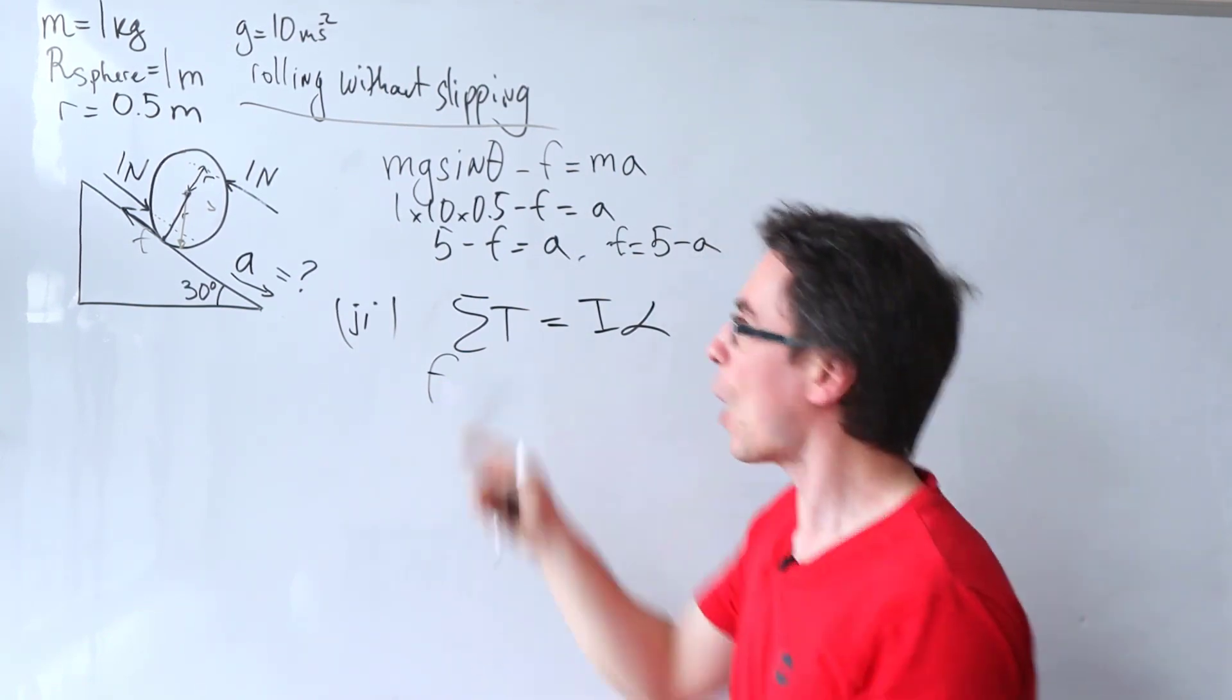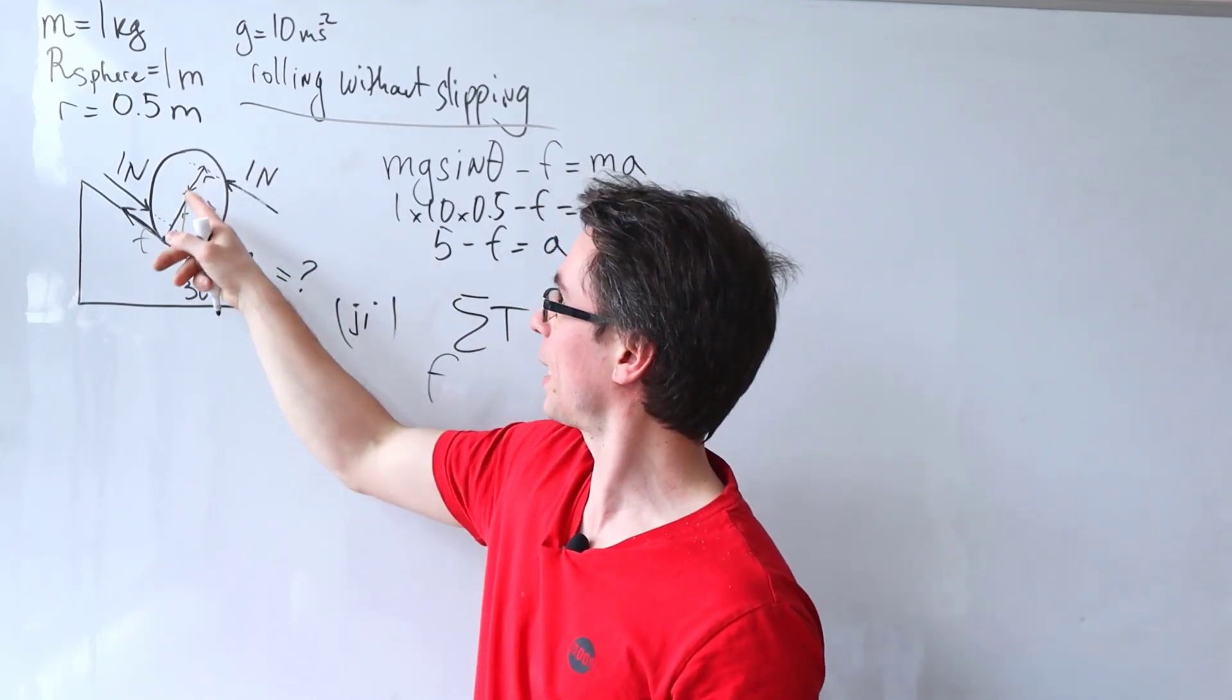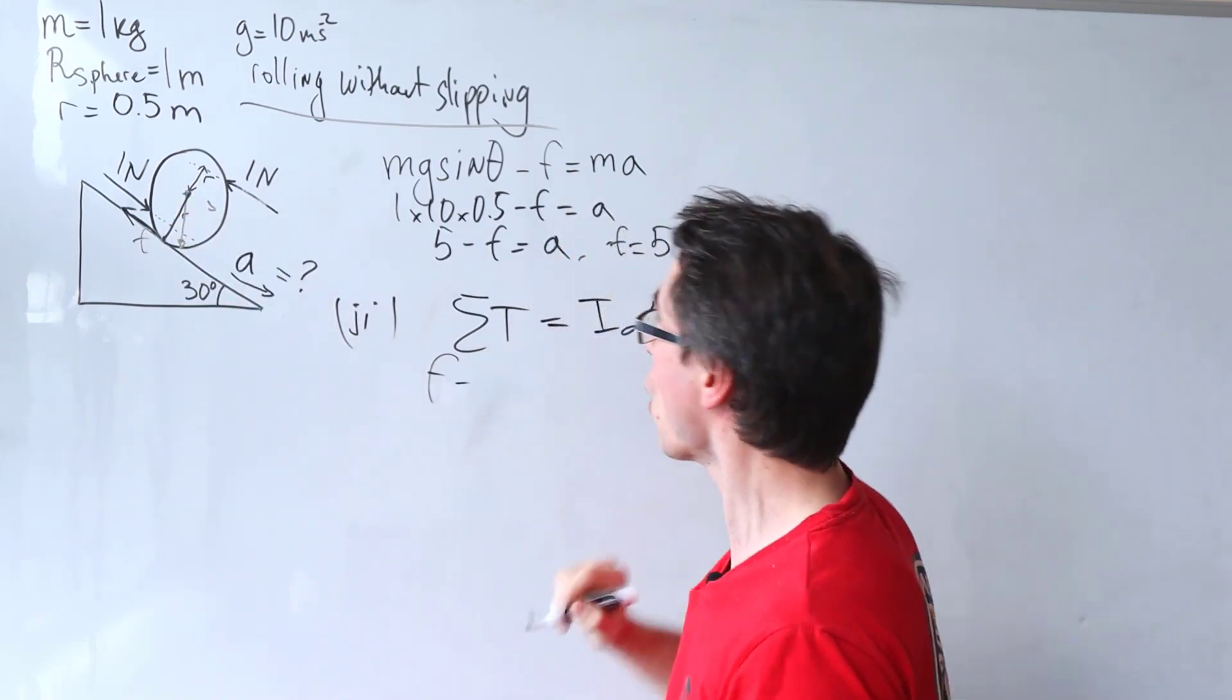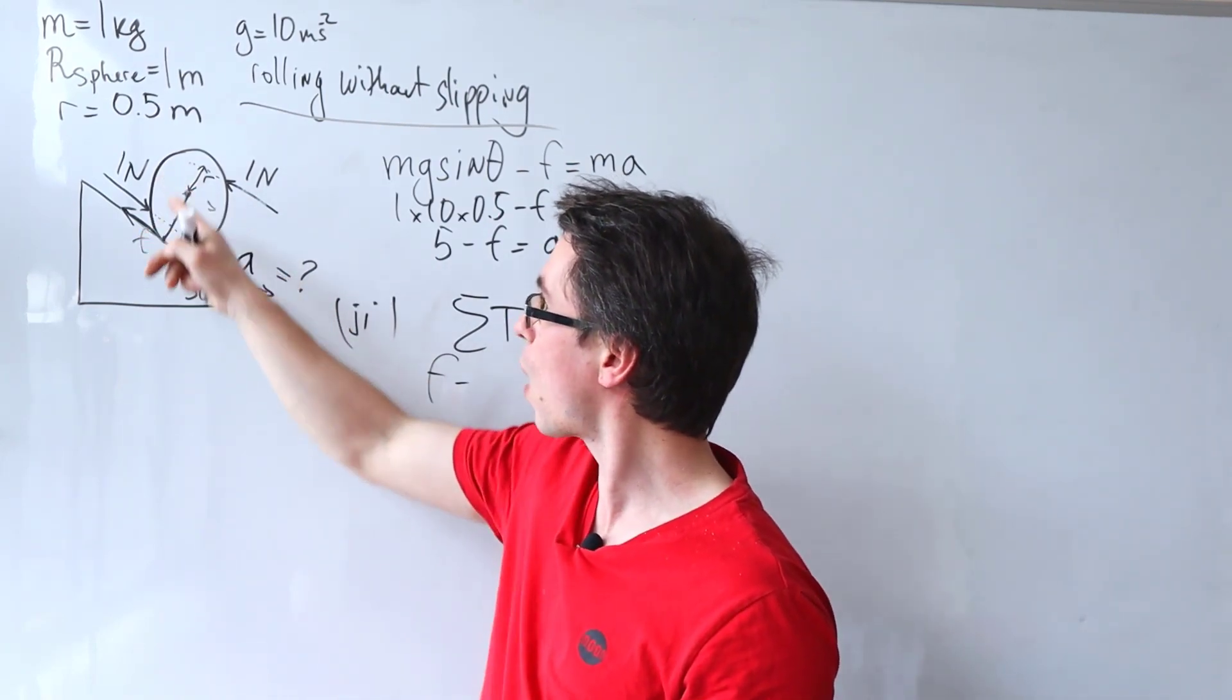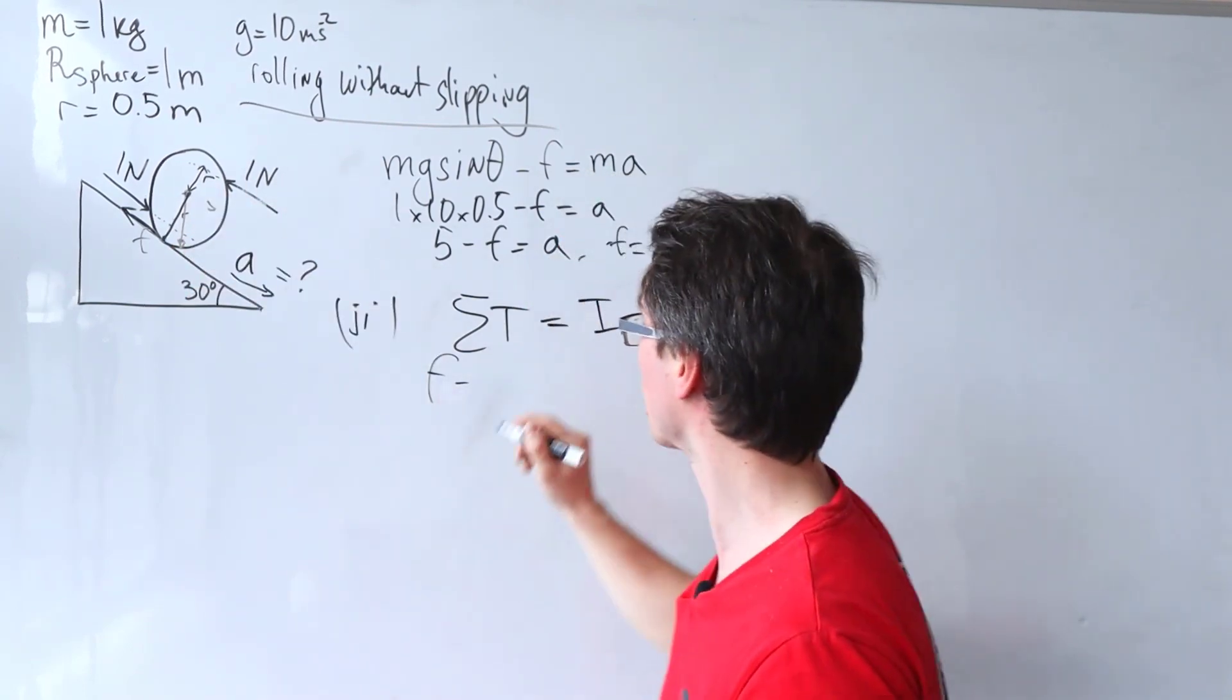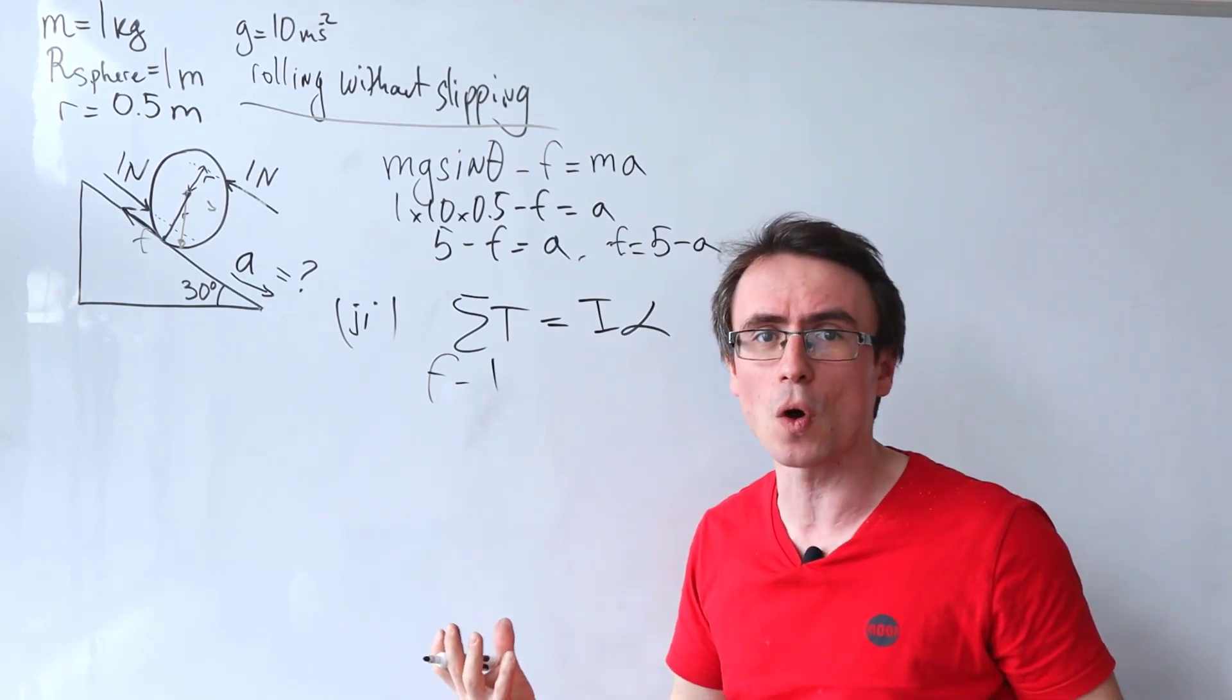Then in the opposite direction, so remember the frictional force is trying to spin it this way and those two guys are trying to spin it the other way. We have those two torques, which are going to be 1 times 0.5. This one here is 1 times 0.5. So that's going to be an overall 1 newton meter of torque.